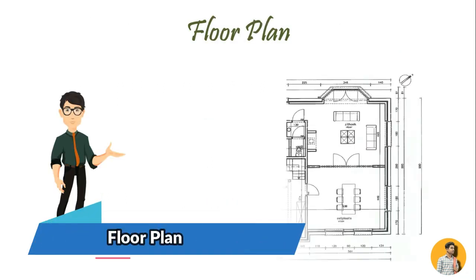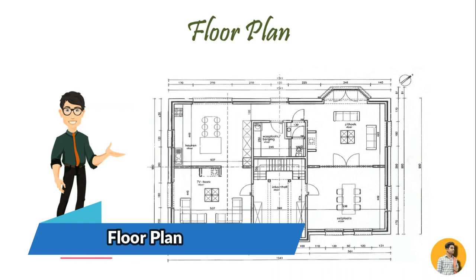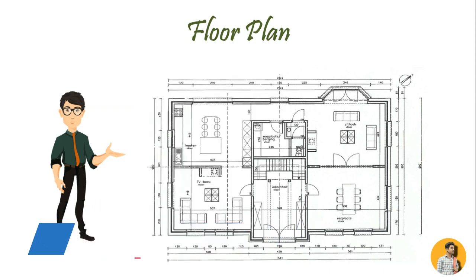Floor plan is the most fundamental architectural diagram, showing the arrangement at a particular level of a building. It includes all dimensions and spaces defined in the floor plan, like bedroom, kitchen, bathroom, guest room, etc. It also locates openings like windows, doors, etc.